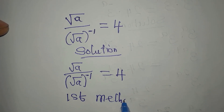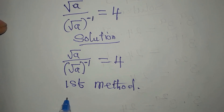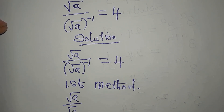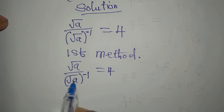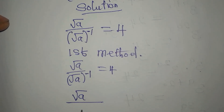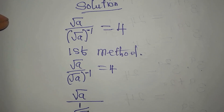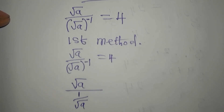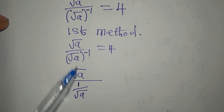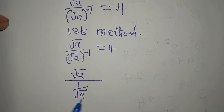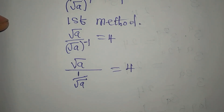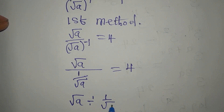First method. We have square root of a over square root of a to the power of negative one equals four. This denominator here can be written as one over square root of a, because of the negative power. So square root of a to the power of negative one is one over square root of a, and this is equal to four. So the left-hand side becomes square root of a divided by one over square root of a, equals four.